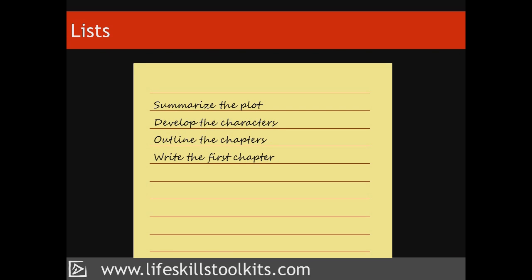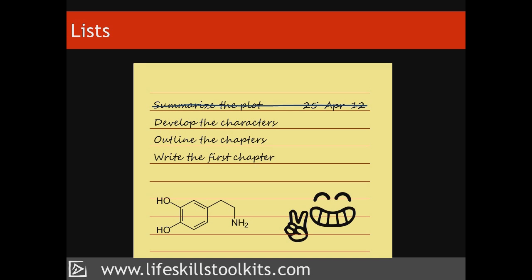To-do lists work by helping us to remember what needs doing. When we make a list, and especially when we place a date or time next to each task, we're more likely to complete it. Crossing out or ticking an item on our list when we've completed it creates a pleasant feeling, which is caused by the release of dopamine, which activates the pleasure and reward centres of the brain. This release of dopamine, and the sensation that it causes, motivates us to move on to the next item on our list so that we can experience that reward again.